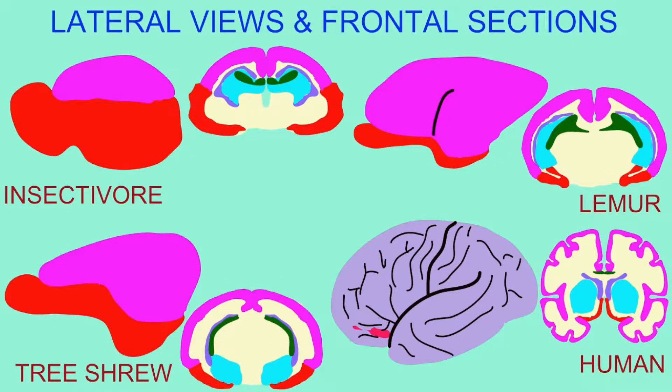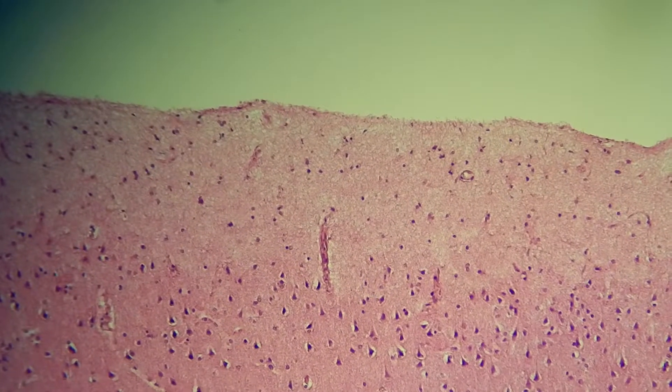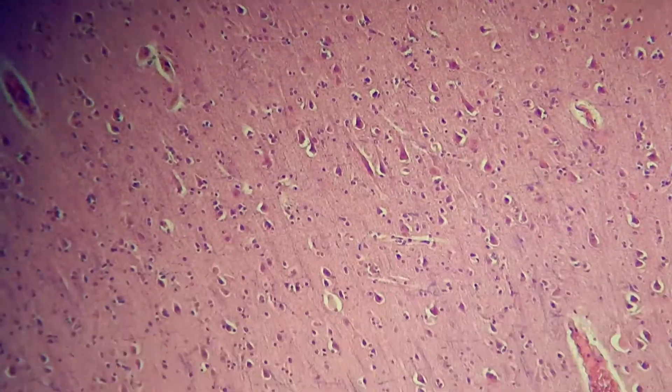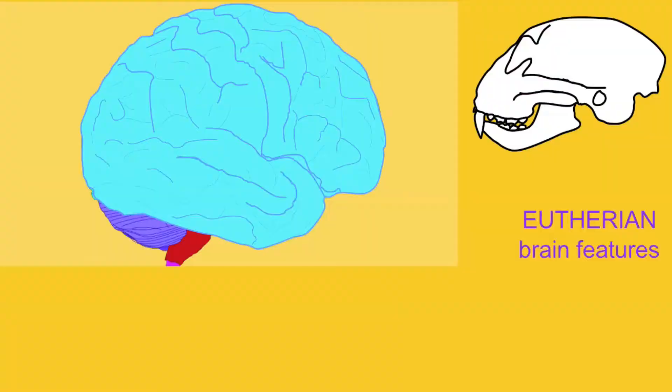And the complexity of this neocortex increased as the six layers of neurons, which is unique to mammals and present in all mammals, evolved.